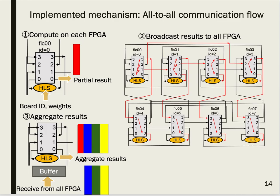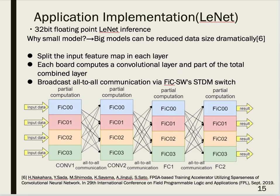I will explain how to achieve all-to-all communication in FIC-SWs. First, each FPGA computes only a partial result. After that, it broadcasts results to all FPGAs. The route is defined by switch parameters beforehand. Finally, each FPGA receives all result data, aggregates the results, and proceeds to the next CNN layer.